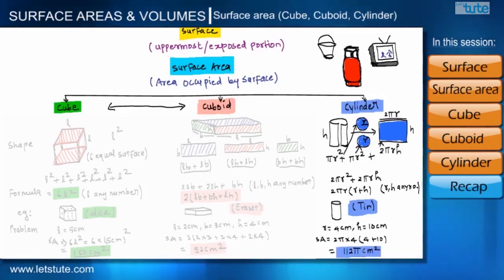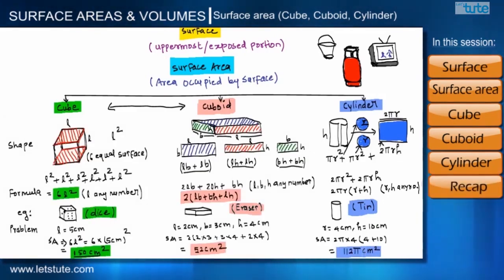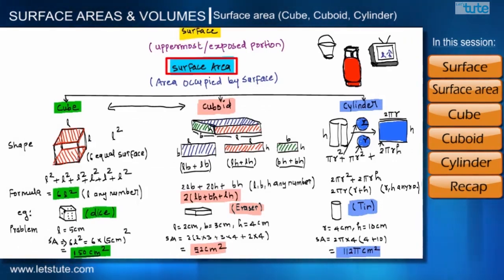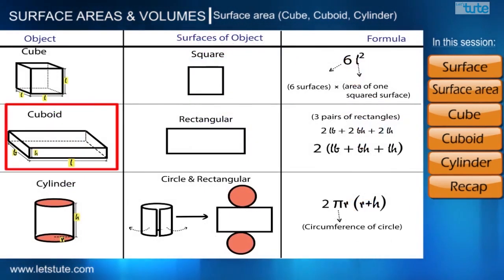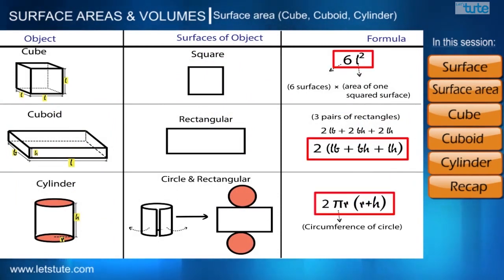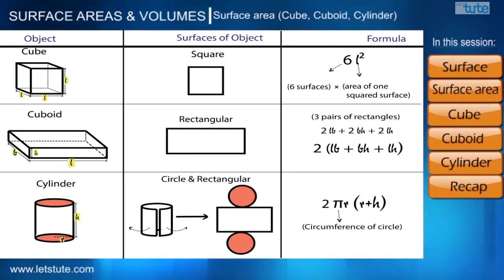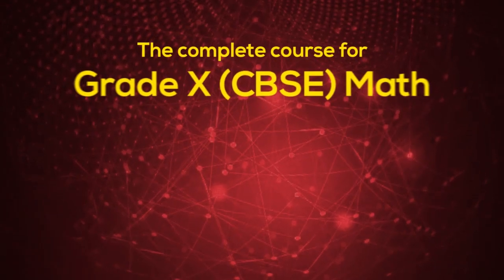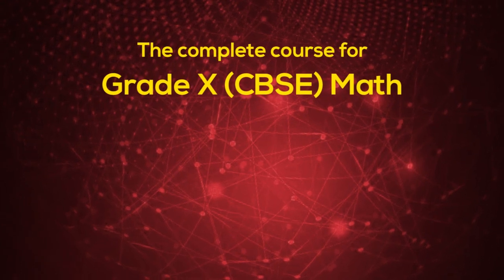Let's have a recap of this session. First, we studied what is surface and what is surface area. Then we defined three shapes — cube, cuboid, and cylinder — and found the total surface area of each. We also solved three problems based on these formulas.